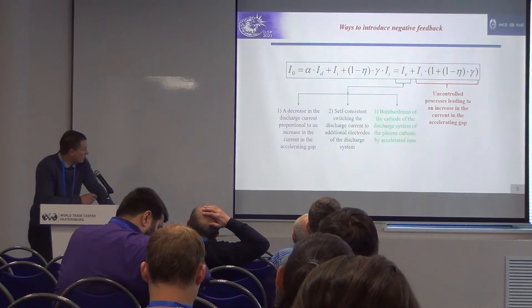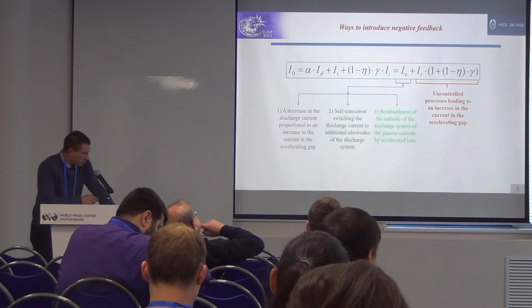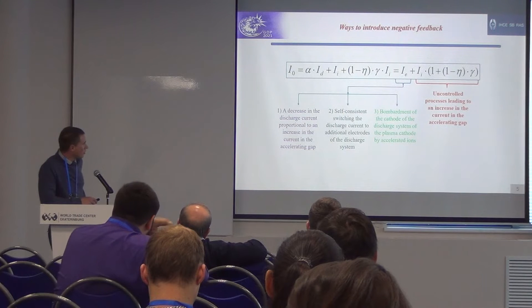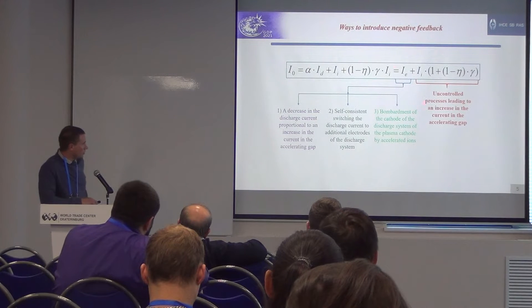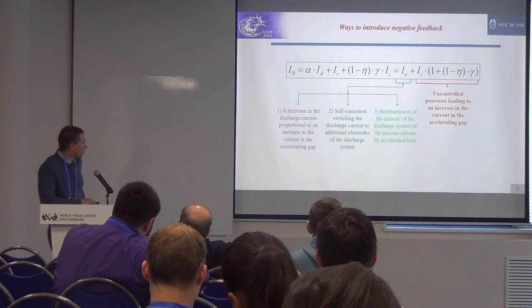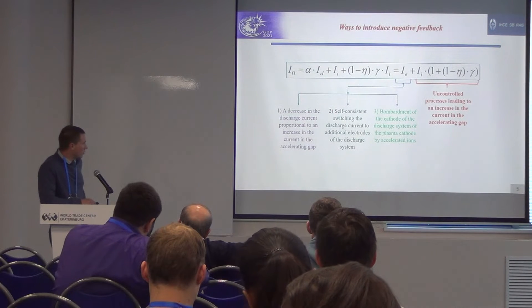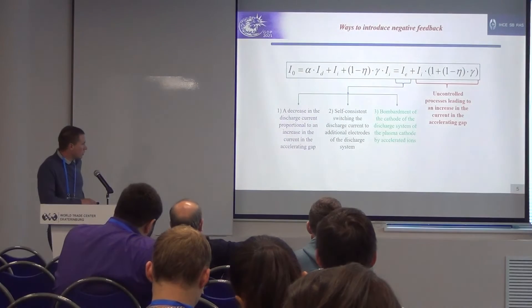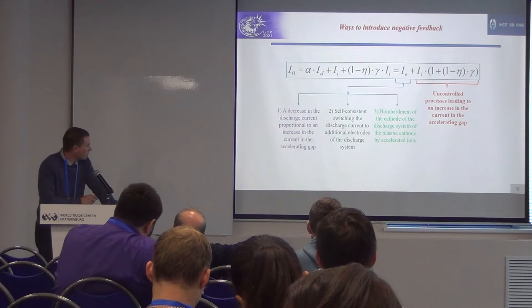That's why, obviously, for decreasing the uncontrollable current in the accelerating gap, we suggest three methods for decreasing the emission current. The first is a decrease in the discharge current proportional to an increase in the current in the accelerating gap. The second is self-consistent switching of the discharge current to additional electrodes of the discharge system. The third is bombardment of the discharge system of the plasma cathode by accelerated ions.